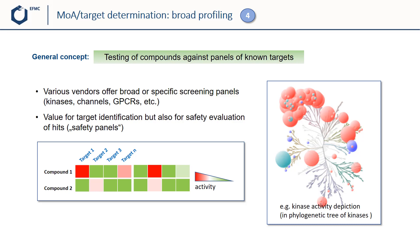Another important, conceptually more simple approach for target identification is to test the hit compound against a broad panel of known targets. These can be specific classes of targets like kinases — also to exclude certain target hypotheses — but also to generate safety data as early as possible by testing against known and problematic safety-relevant off-targets. Often you would then see these test results in heat map formats or other visualization formats.